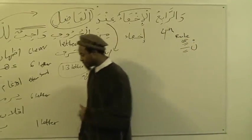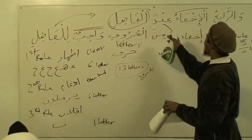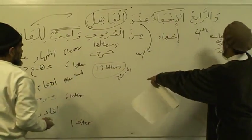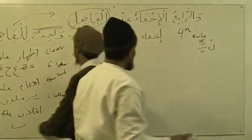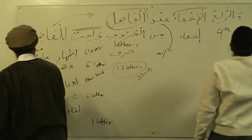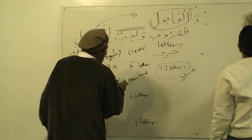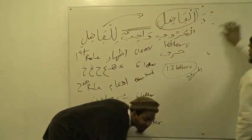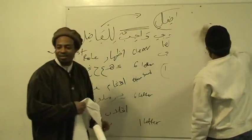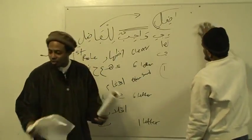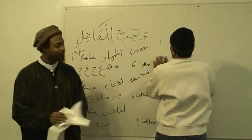Then it says how many letters? I purposely said, where are the letters? What are the letters of Ikhfaa? We said we did 13 letters, right? How many letters are left? We don't have to even think about it — 15. Because the poem tells us straight up, it's in 15 letters.